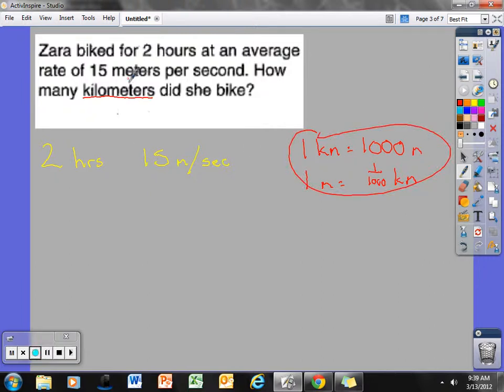I want to figure out how many meters she covered in these 2 hours. So, she went for 2 hours at 15 meters per second. 2 hours is equal to, how many seconds are in 1 hour? We know that's 3,600 seconds in an hour. If she did that for 2 hours, I'll times it by 2. That means she biked for 7,200 seconds.